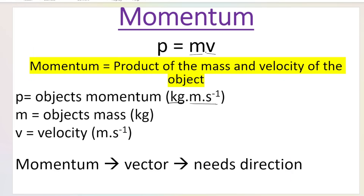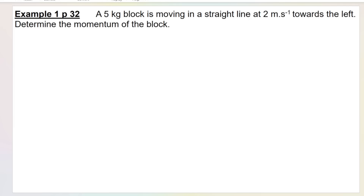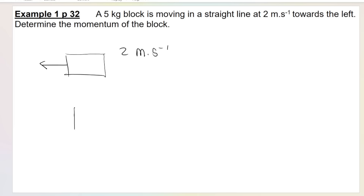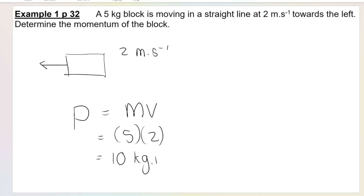Vectors need direction. Here's a basic example: a five-kilogram block is moving in a straight line at two meters per second towards the left. Determine the momentum of the block. Momentum equals mass times velocity. The mass is five, the velocity is two meters per second left, so the momentum is 10 kilograms meters per second left. You have to include your direction — absolutely have to. In an exam, a question like this would be three marks: formula, substitution, answer with units and direction.